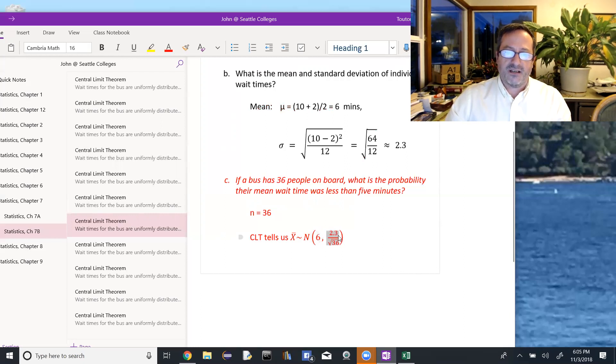And a standard deviation of, well, it's technically the square root of 64 over 12, divided by the square root of 36. But just to make it a little easier to see, I'm going to approximate it with 2.3 divided by the square root of 36. And I also chose 36 so that I could square root that and get 6.